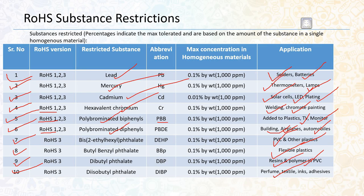All these substances have been restricted to 0.1 percent by weight, or 1000 ppm, except cadmium, which is restricted to 0.01 percent by weight, or 100 ppm. Above this threshold level, if the quantity of any of these substances in your product crosses the threshold, you cannot sell the product in the market — it would not be RoHS compliant.